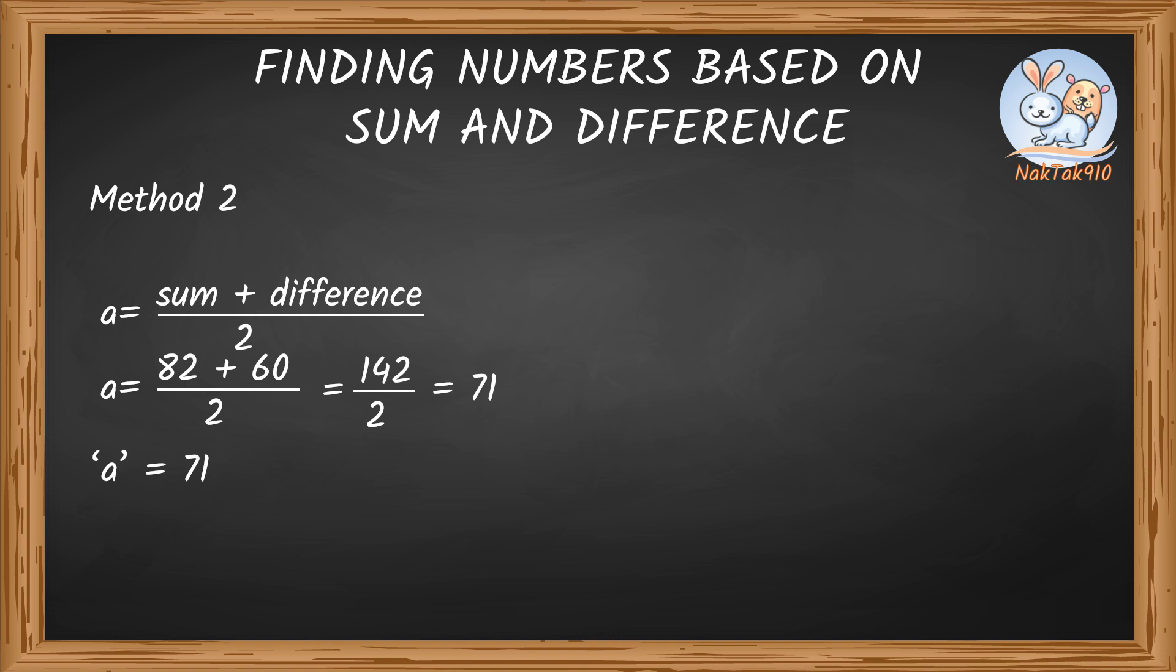To get a sum of 82, we need to add 11. 71 plus 11 equals 82. So the other number, b, is 11. Two numbers whose sum is 82 and difference is 60 are 71 and 11.